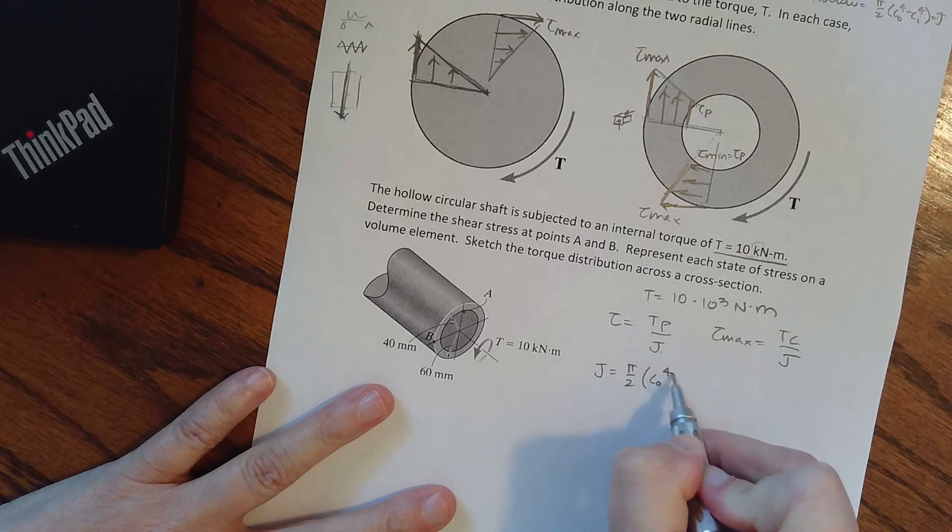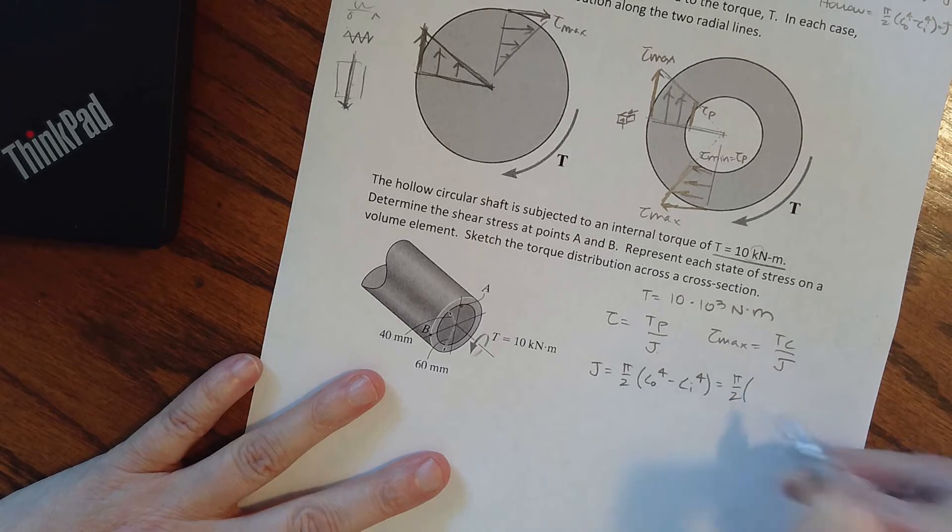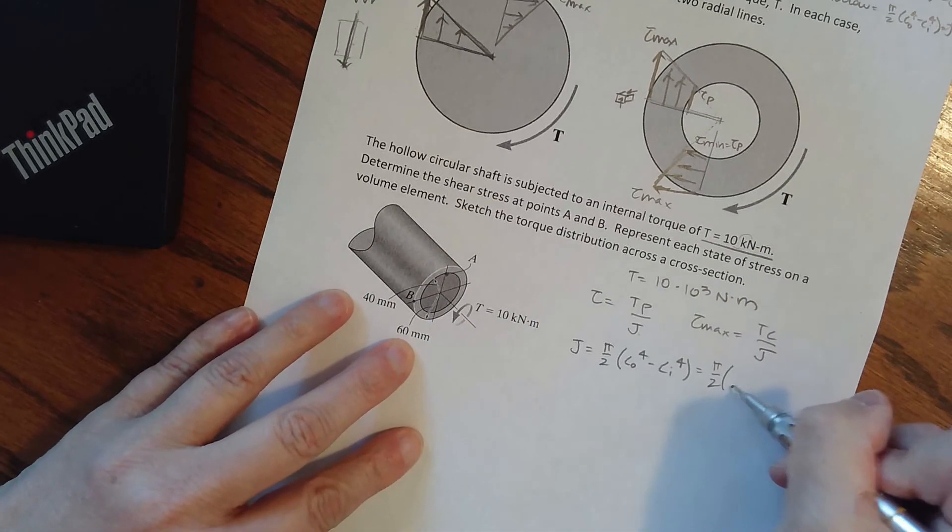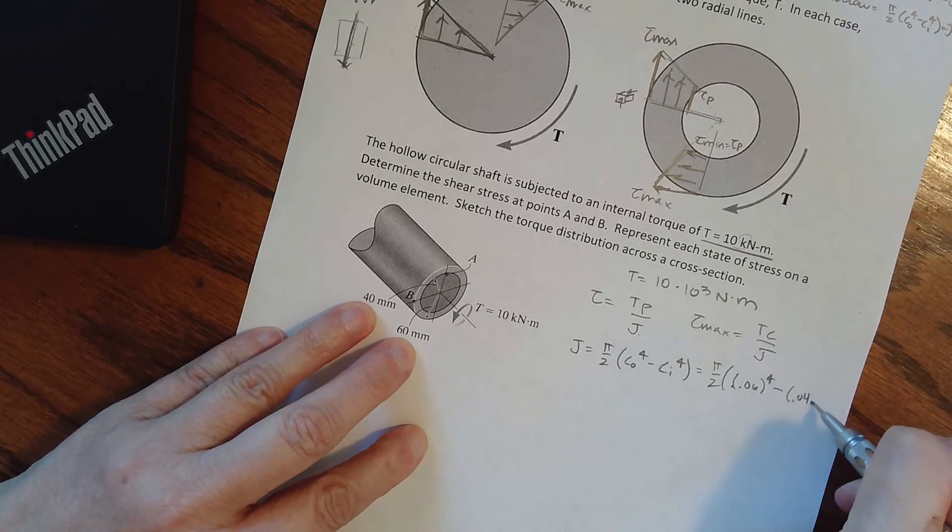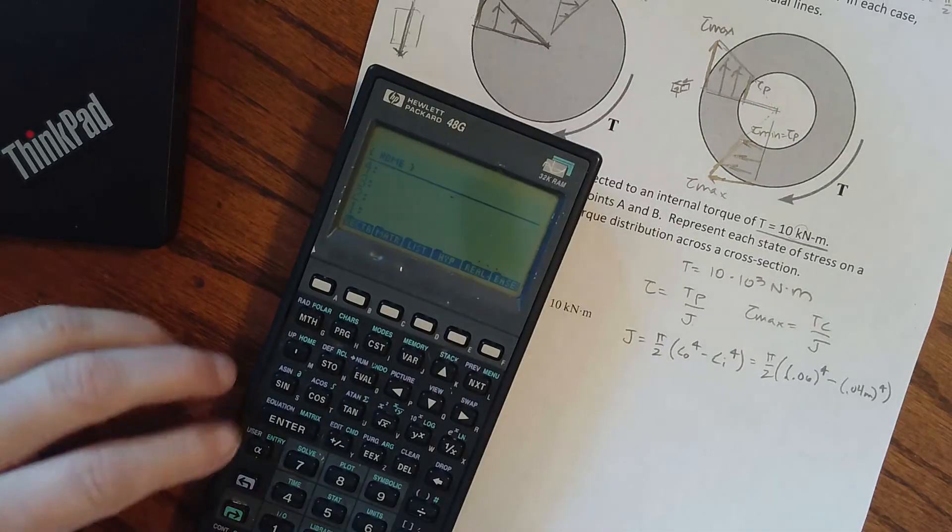So J equals pi over two, C outer to the fourth minus C inner to the fourth, and remember C is our radius. We're going to have pi over two, and I need to be in meters. I have 0.06 meters to the fourth minus 0.04 meters to the fourth.